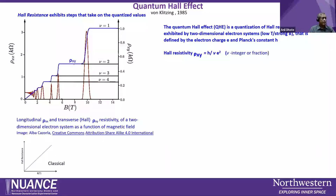But instead we get something different. The blue graph for ρ_xy exhibits steps, and the red plot for longitudinal resistivity shows oscillations. Quantum Hall effect is the quantization of Hall resistance exhibited by a two-dimensional electron system at low temperature and strong magnetic field. It is defined by electron charge e and Planck's constant, where ν is an integer or fraction. If ν is an integer, it is called the integer quantum Hall effect; if it is a fraction, it is the fractional Hall effect.